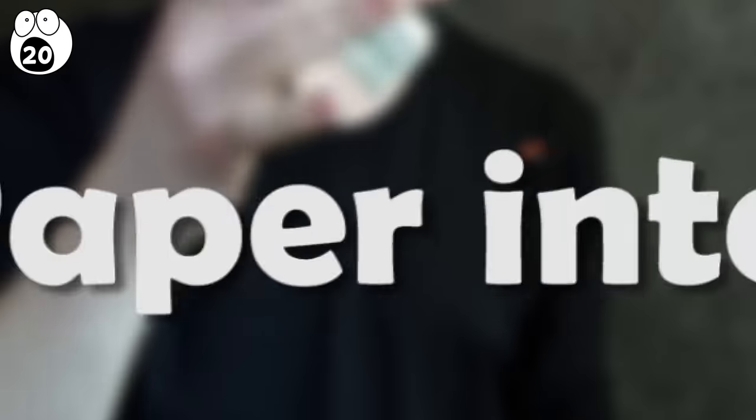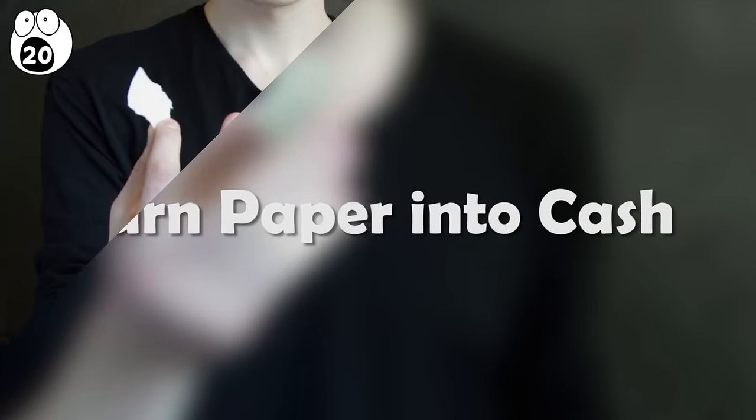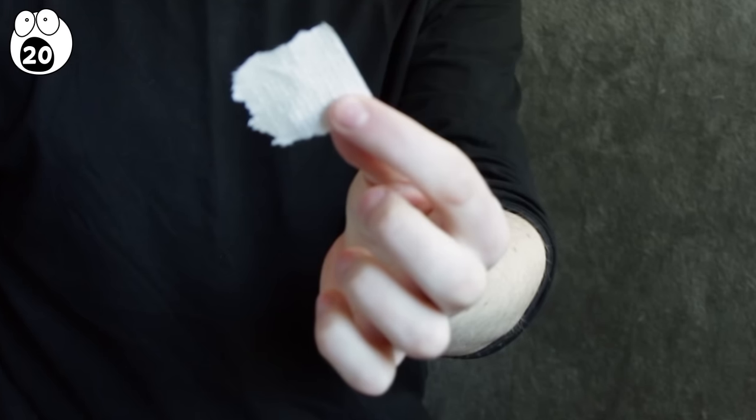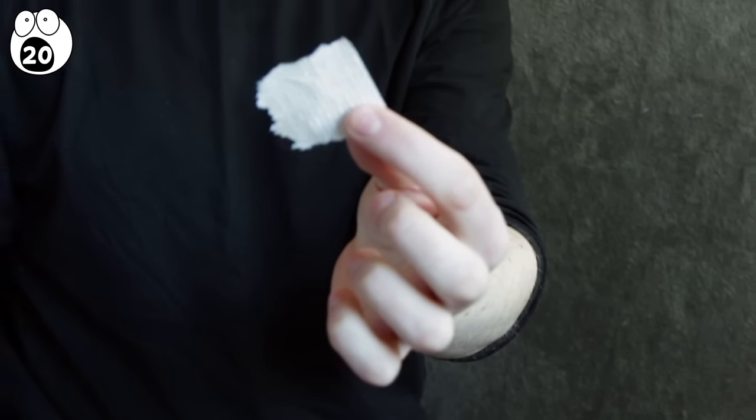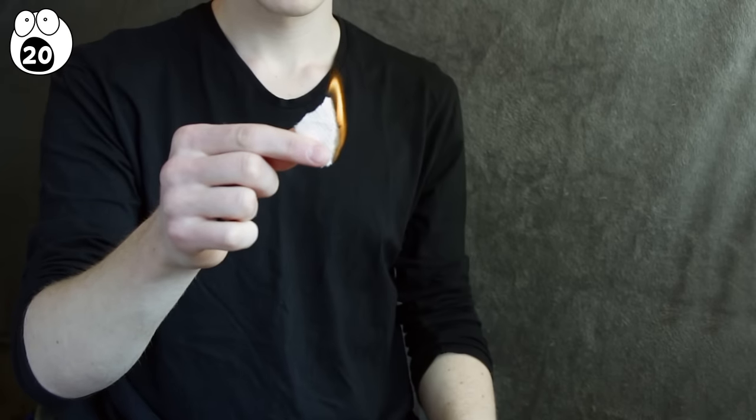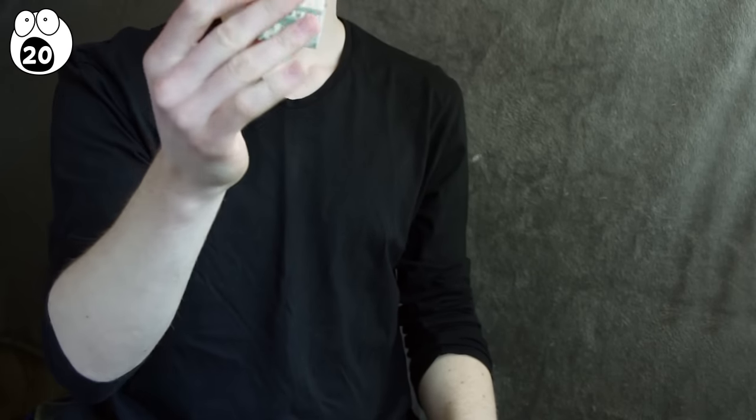Number 20. Turn Paper into Cash. Magic always looks more impressive with fire. Of course, we always urge caution when adding anything flame-related to a trick. For this one, you'll need a piece of paper, a firelighter, and some cash. Hold the piece of paper in your hand, then set it on fire. Flick your wrist, and hey, presto! In its place, you have a 20-pound note.